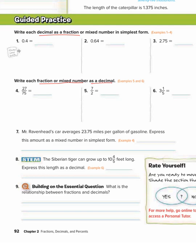Number one is 0.4, or 4 tenths. To write a decimal as a fraction, you need to use the place value. This 4 is in the tenths place, so we write it as 4 over 10. And then we always need to simplify — 4 and 10 can both be divided by 2, and we would get 2 fifths.